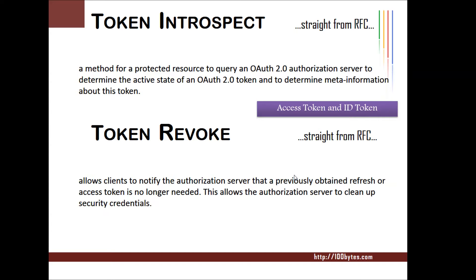The token revoke endpoint allows clients to notify the authorization server to revoke the access token and the refresh token which were obtained previously from the authorization server. This allows the authorization server to clean up the security credentials related to this token. We can revoke both the access token and refresh token.